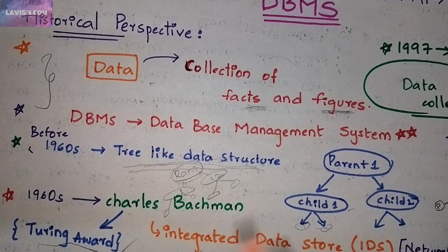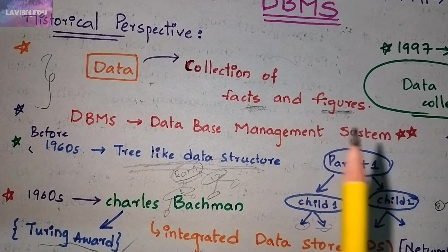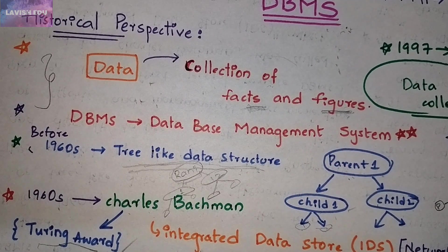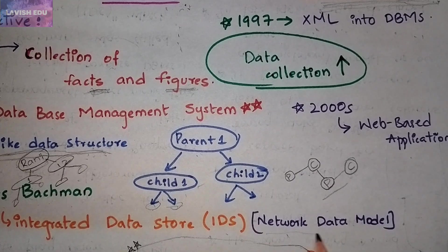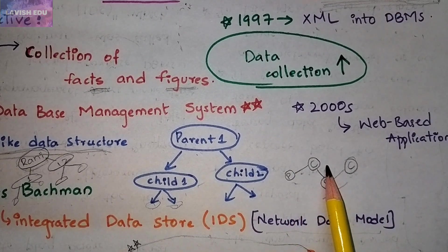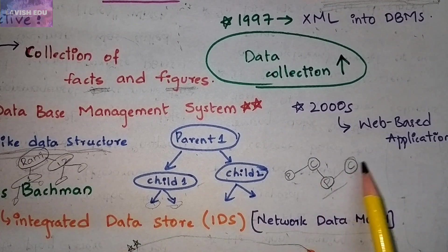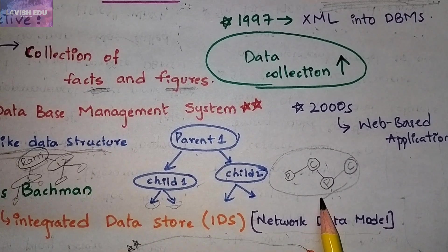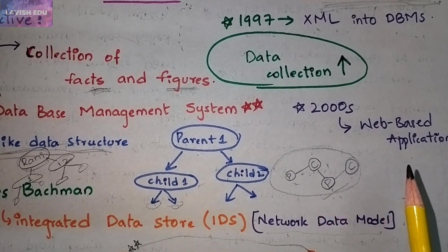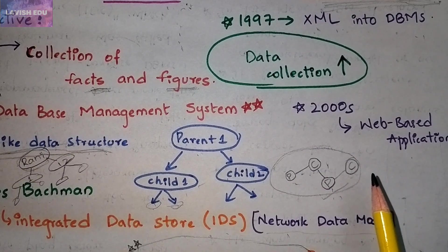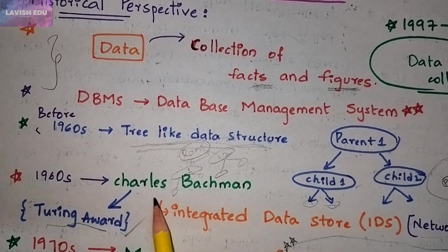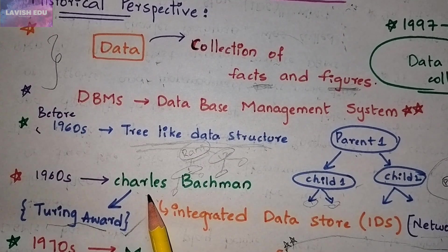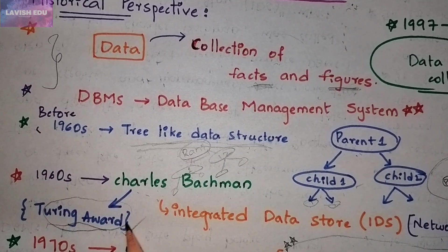In the 1960s, Charles Bachman was the scientist who did terrific work on the DBMS and introduced the Integrated Data Store. He introduced this in the form of a network data model, where a parent is connected to a child, a child is connected to another parent, and so on — forming a network of connections. For this achievement, he was awarded the Turing Award, which is equivalent to the Nobel Prize in the field of computer science.